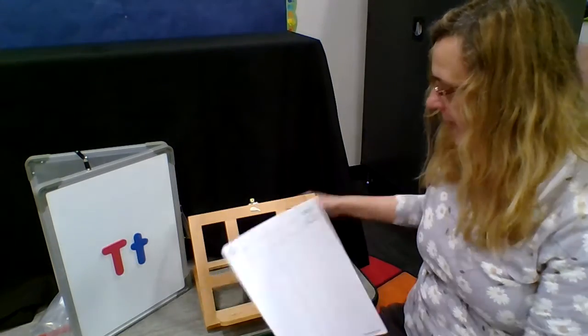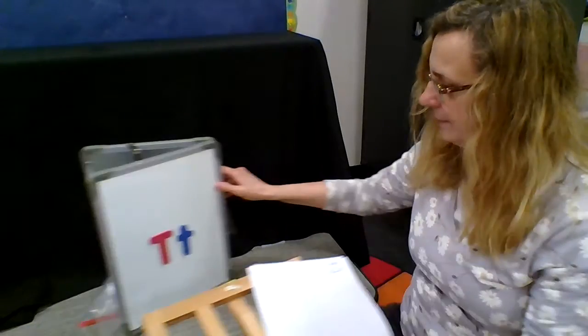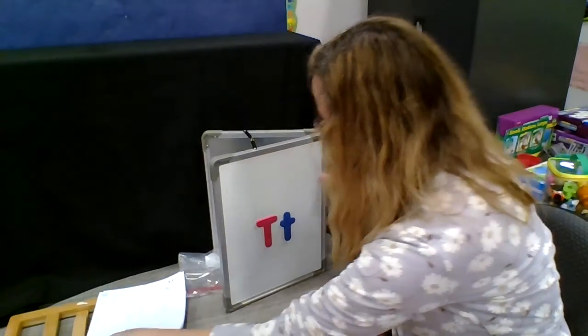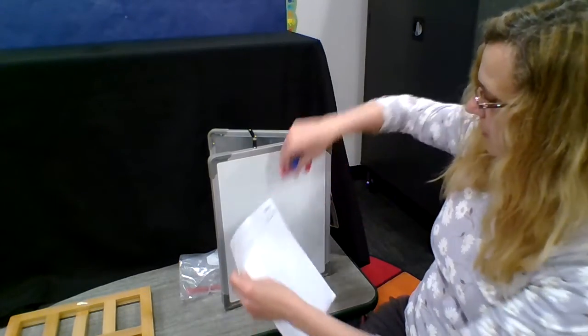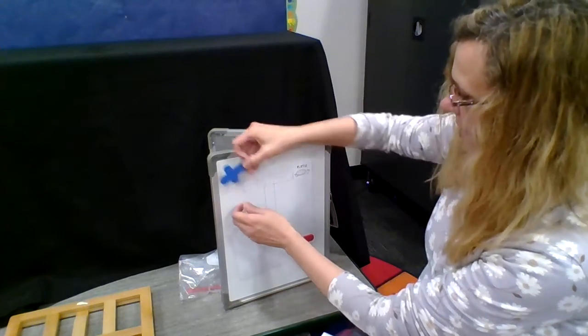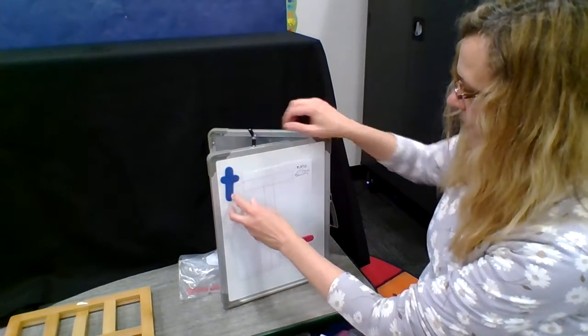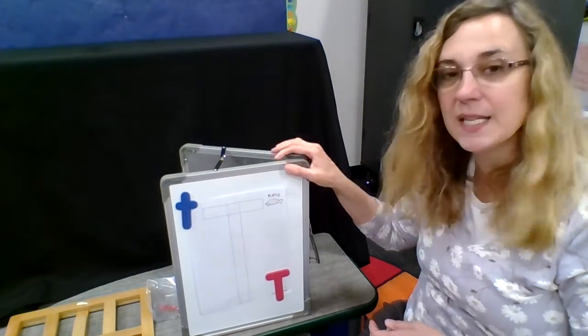So I think what we're going to do is slide this over and we're going to set this just like this so we can see a little bit better. Can you see that? There's our T.